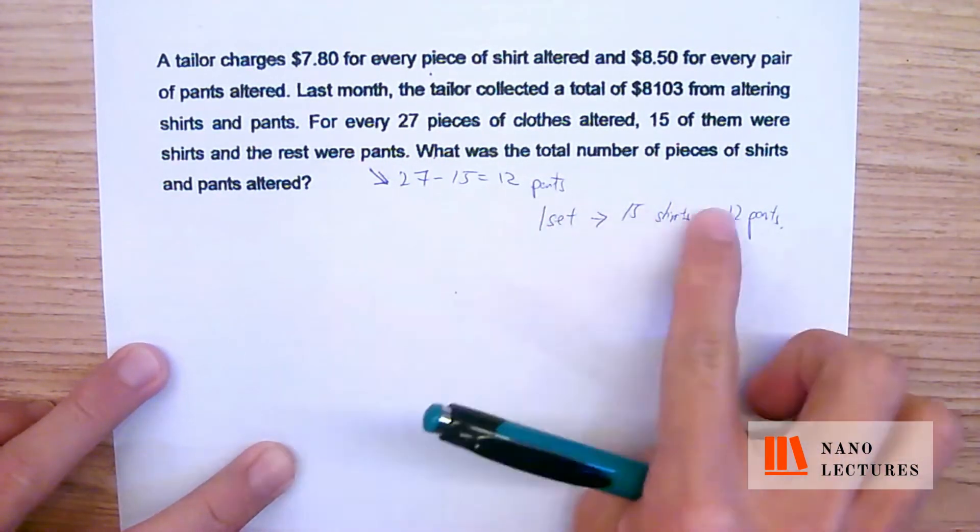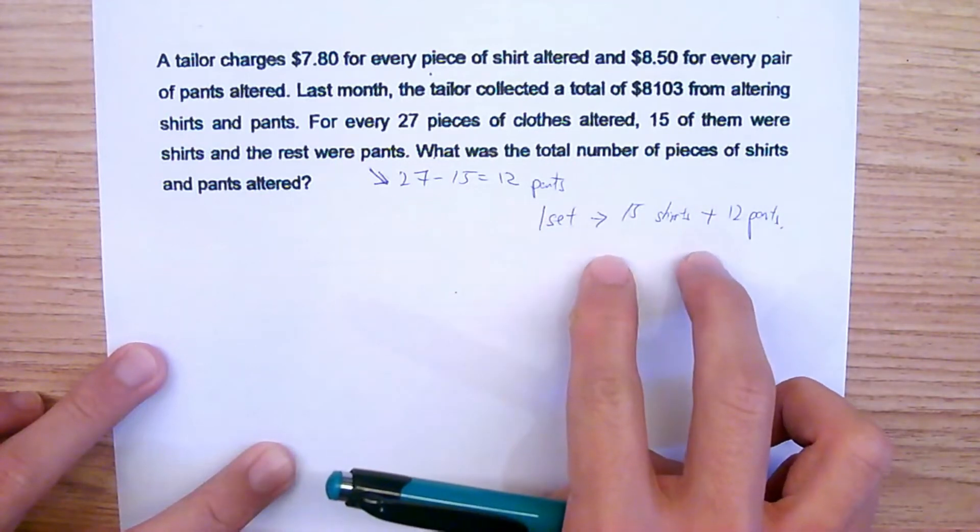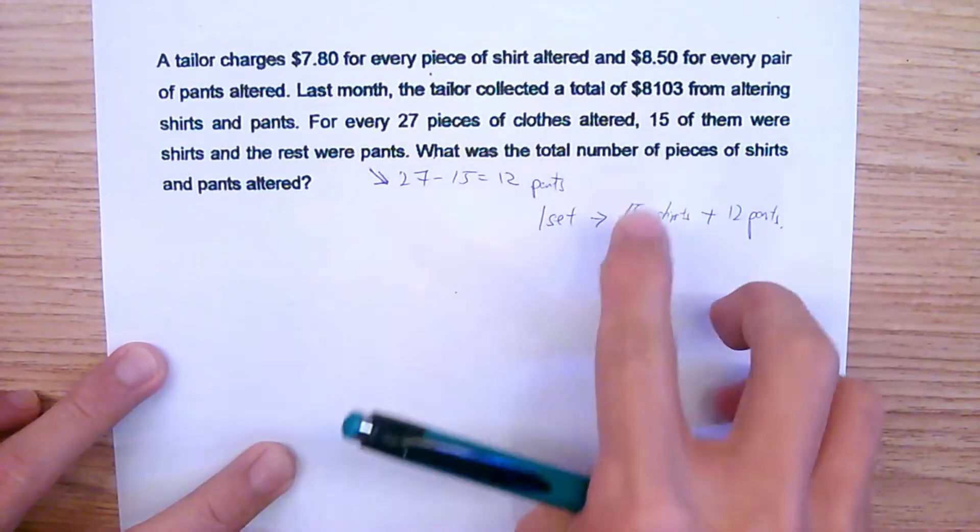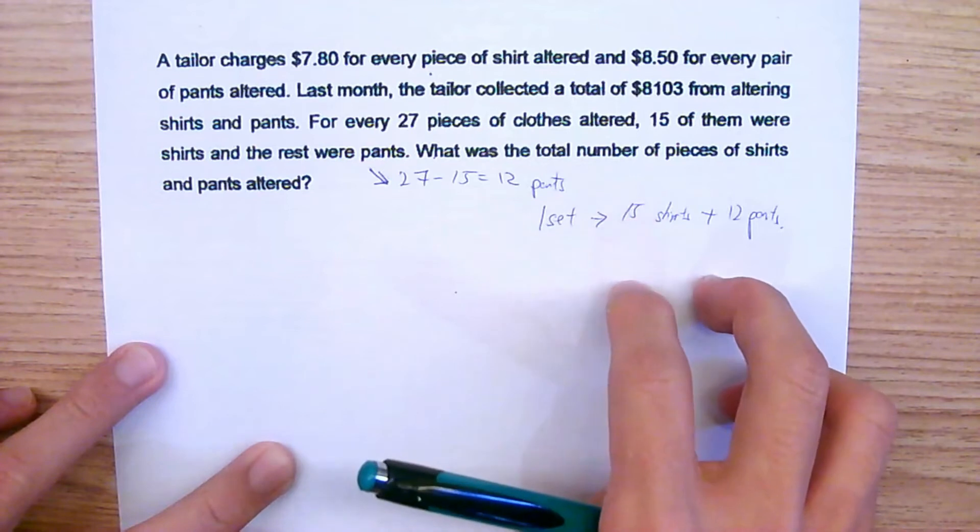How much is in 1 set? Because after you find out 1 set, you find out the total amount. And then you take this total divided by this amount, and you'll find out how many sets there are altogether.